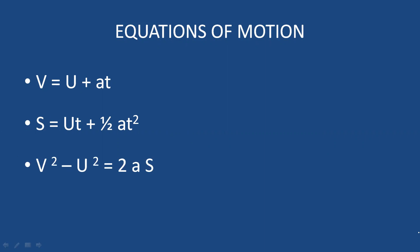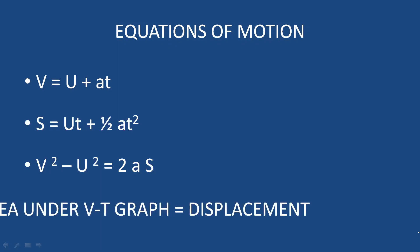This is also the velocity-time graph. The significance of the velocity-time graph: the slope gives acceleration, and the area under the velocity-time graph gives displacement. So we have three equations — v = u + at, s = ut + ½at², v² - u² = 2as — and the area under the v-t graph equals displacement.